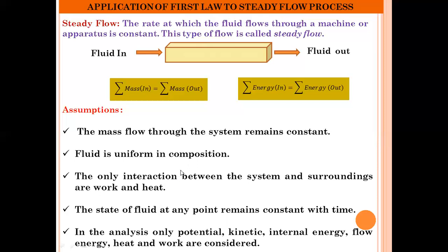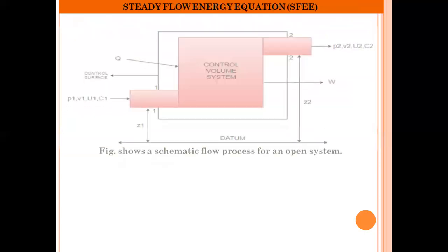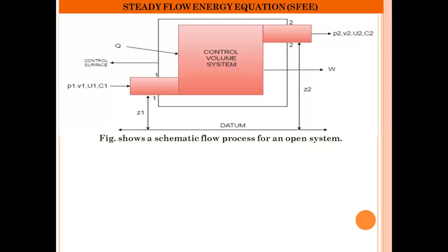To write the steady flow energy equation for an open system, let us take an example. For an open system, both mass and energy may cross the boundary of the system. We take a certain volume under consideration for thermodynamic analysis, termed the control volume, and the boundary surrounding that control volume is called the control surface. For an open system, there is one inlet and one outlet.